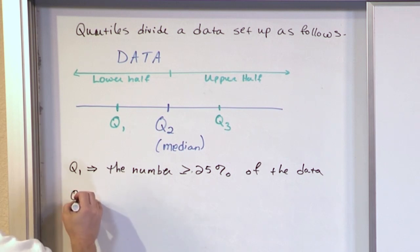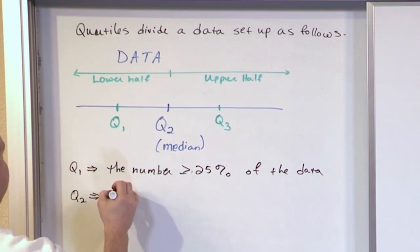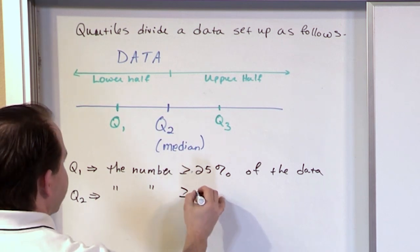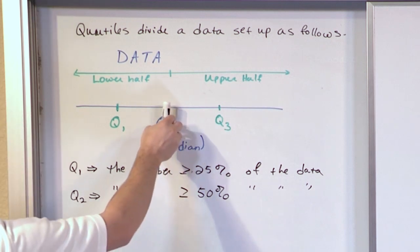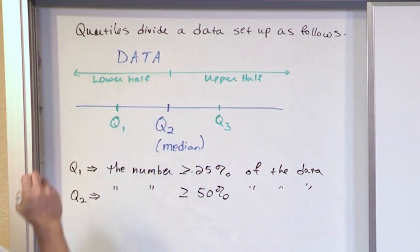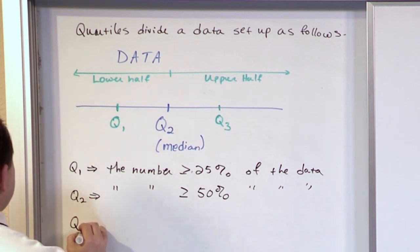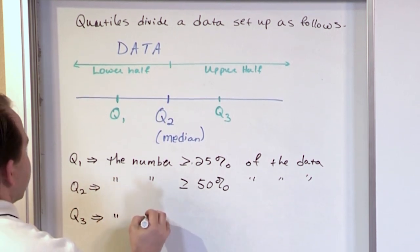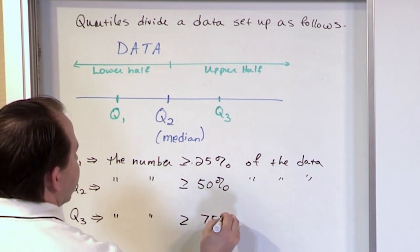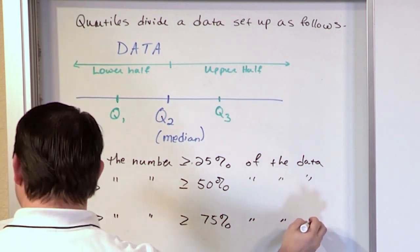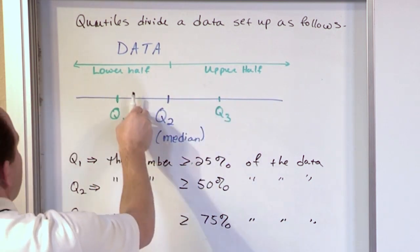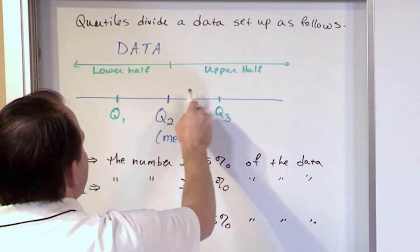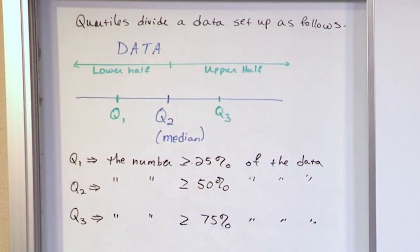And then we have Q2. It's the number greater than or equal to 50% of the data. And that makes sense because the median Q2 is greater than or equal to 50% of the data. And then Q3 is the number — 75% of the data. And that makes sense because Q3, since you're all the way over here, this is first quarter, second quarter, third quarter of the data, you're greater than or equal to 75% of the data.